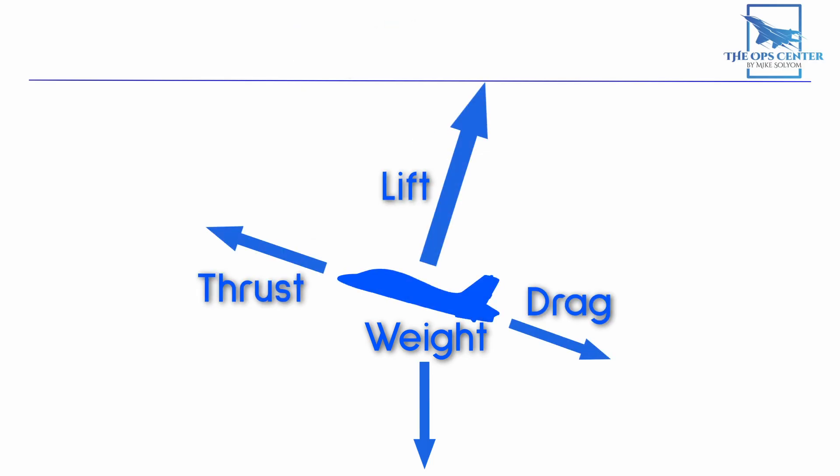Thrust and drag are aligned with the direction of travel, so they're now tilted at an angle. Lift is always perpendicular to the direction of airflow, so it's now also off at an angle. But weight stayed exactly the same because the pull of gravity is always straight down regardless of where the aircraft is pointed. This is important because now drag has a downward component.